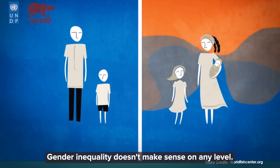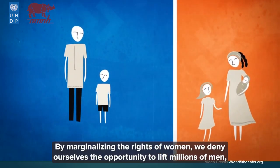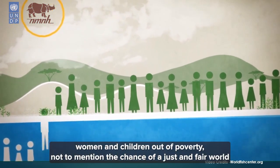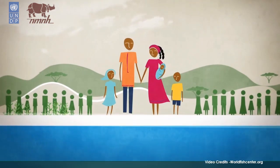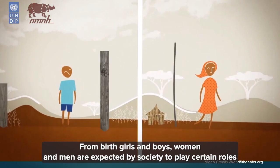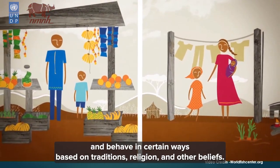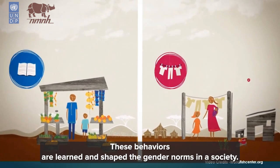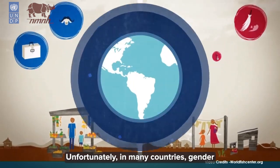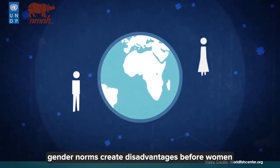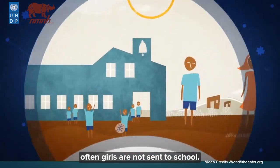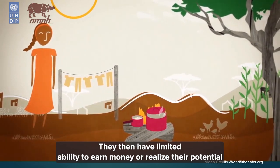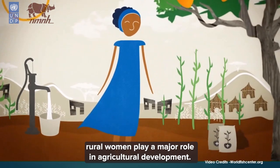Gender inequality doesn't make sense on any level. By marginalizing the rights of women, we deny ourselves the opportunity to lift millions of men, women, and children out of poverty, not to mention the chance of a just and fair world. From birth, girls and boys, women and men are expected by society to play certain roles and behave in certain ways based on traditions, religion, and other beliefs. These behaviors are learned and shape the gender norms in a society. Unfortunately, in many countries, gender norms create disadvantages for women. Often, girls are not sent to school, and when they become women, they have limited ability to earn money or realize their potential. Rural women play a major role in agricultural development.